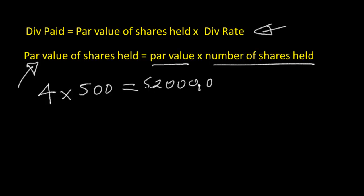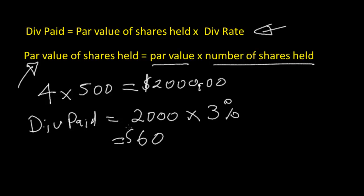Then the div paid to you - your div paid equals the par value of the shares held, which is $2,000, times your div rate, which in our case is 3%. Make sure you divide that, so this is 0.03. That means you get $60 for those shares.